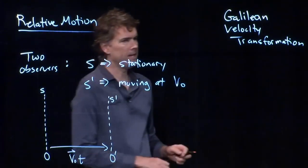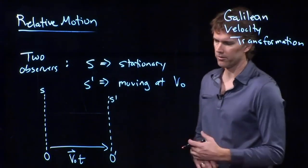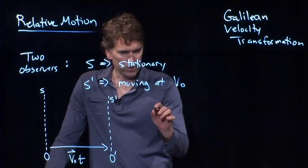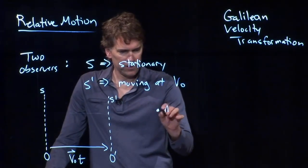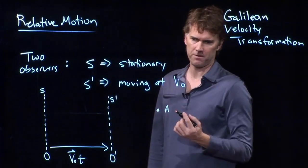So in a time T, it will traverse a distance V naught T. Just increases as a function of time. Now, something that we observe is sitting up there at A. That could be the position of the pen when I tossed it.